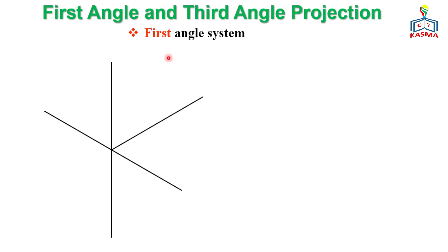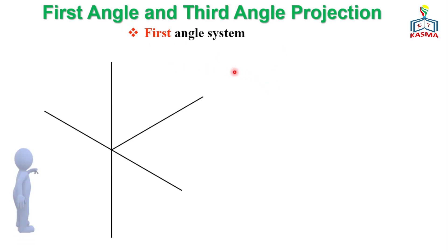In this video, we'll see the first angle and third angle projection system. The first angle and third angle projection depend on the locations of the object relative to the projection plane, the observer, and also the quadrant system.